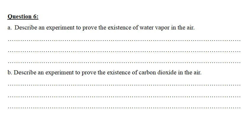Question six, part A: describe an experiment to prove the existence of water vapor in the air. Bring a glass cup, place ice cubes in it, and leave it in a room exposed to open air. After a while, water droplets form on the outer walls of the glass — this shows that humidity in the air is condensing, proving the existence of water vapor.